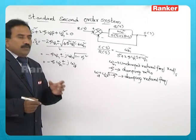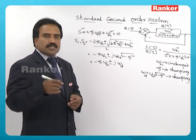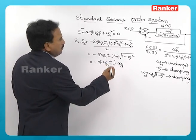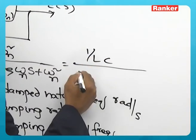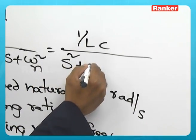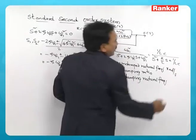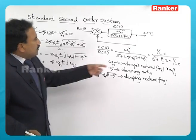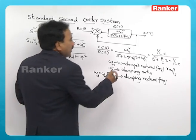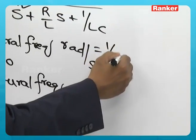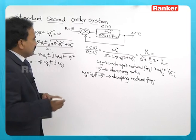If you compare this second order system with our electrical system discussed in previous sections, it is given by 1 by LC and by s square plus R by L into s plus 1 by LC. If you compare this standard second order system with our electrical system, omega n is given by 1 by root LC. Undamped natural frequency depends only on L and C.